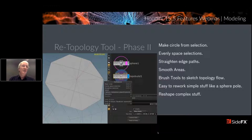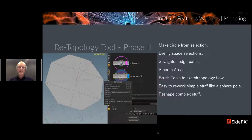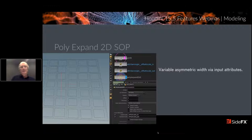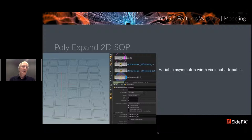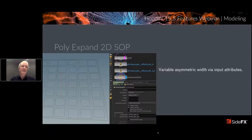Retopology Tool Phase 2. Fiona had a nice introductory video — if you haven't seen it, definitely go see it. In this case, I just took a sphere and reworked the pole to give it proper quads. It has the same options as the Edit SOP: make a circle from selection, evenly-spaced selections, and straighten edge paths — all while doing retopology. Use the middle mouse button to complete your current retopology stretch and enter edit mode. Draw some quads, middle mouse, draw some more quads — it's a great tool.